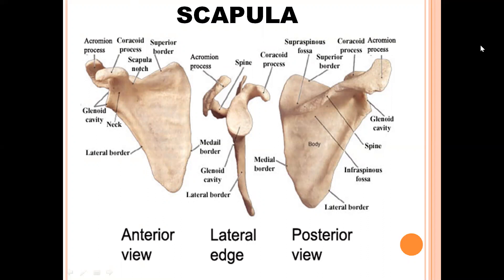The upper small part contains the supraspinous fossa and the lower part contains the infraspinous fossa. The scapula has three angles. First is the lateral angle, modified to form the glenoid cavity. This glenoid cavity articulates with the head of humerus to form the glenohumeral joint. Second is the superior angle. Third is the inferior angle. Scapula also has three borders: lateral border, superior border, and medial border.